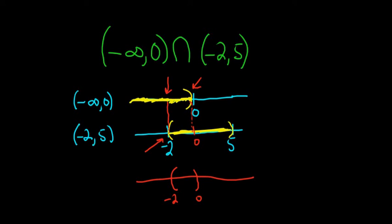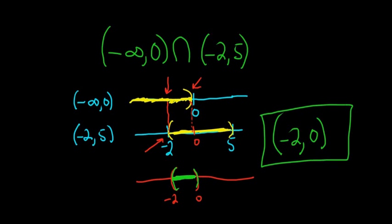Then we shade everything in between these numbers. That would be the graph of the intersection. The answer would be parenthesis negative 2 comma 0 parenthesis. And that's it.